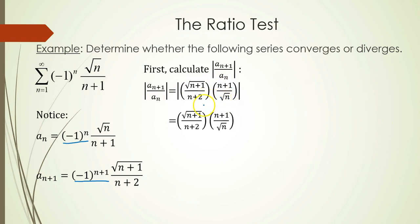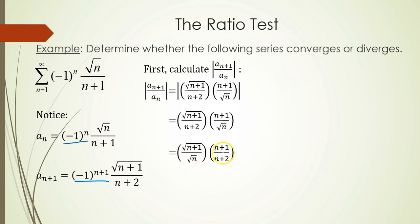For n equals 1 to infinity, we always have a positive value for every grouping, so there's no need to include absolute value signs. I'm going to write the square root groupings together in one fraction and the non-square root groupings in another, giving me the square root of n plus 1 over n, times n plus 1 over n plus 2.